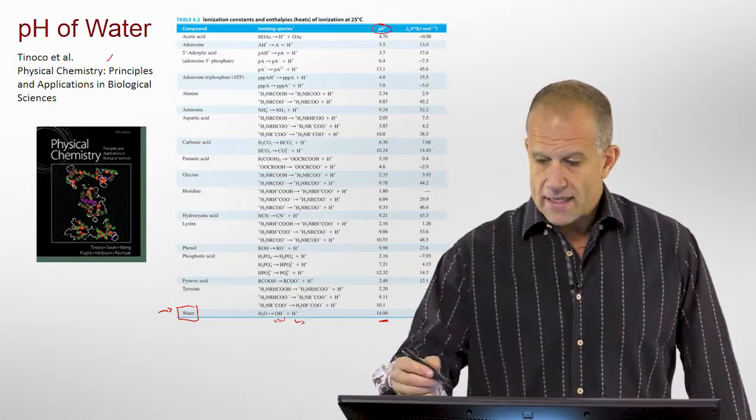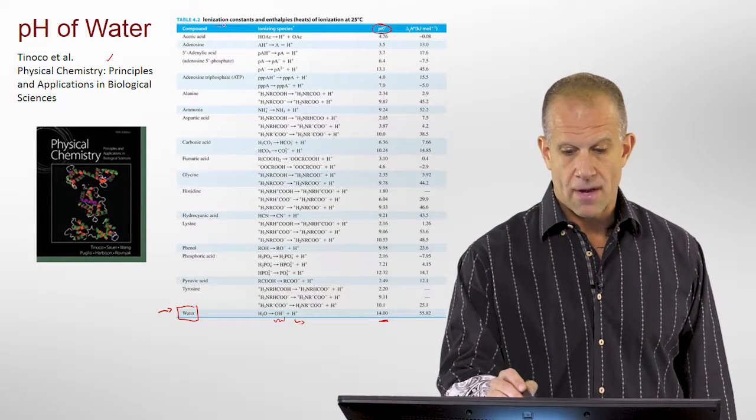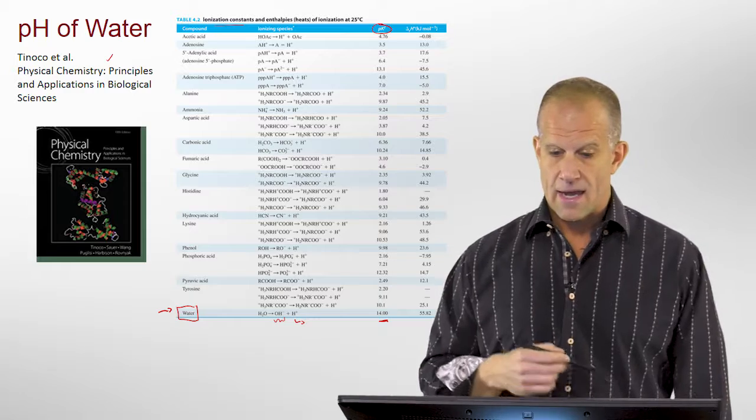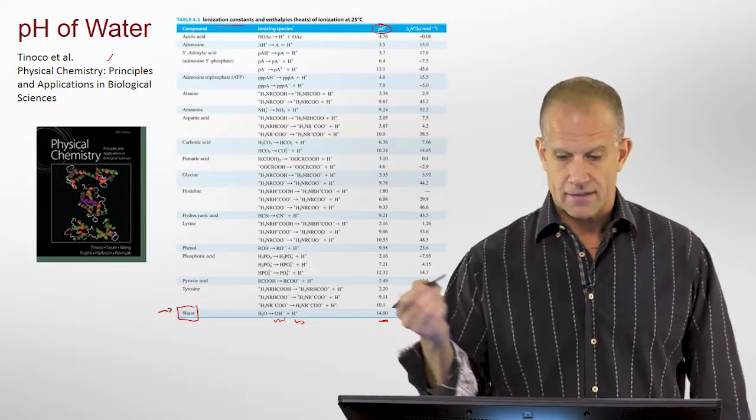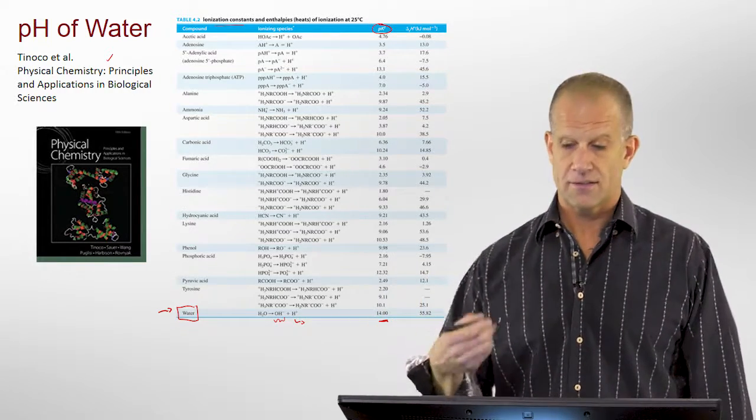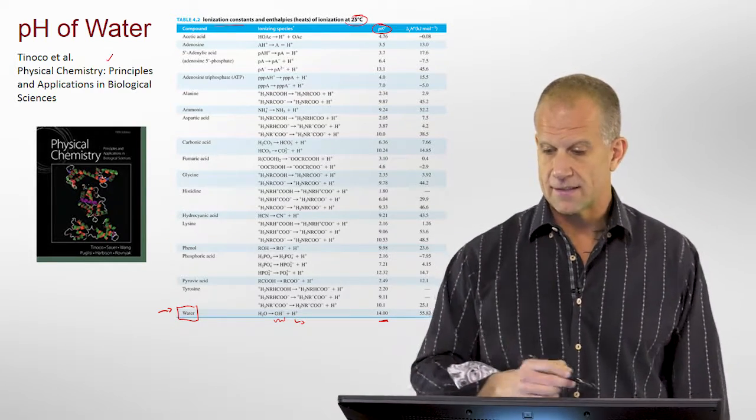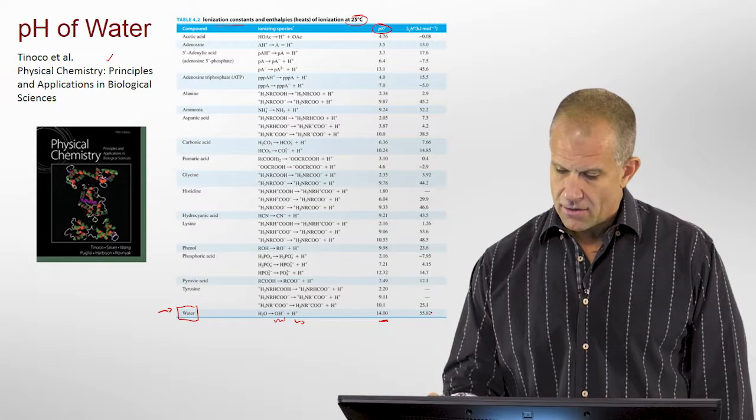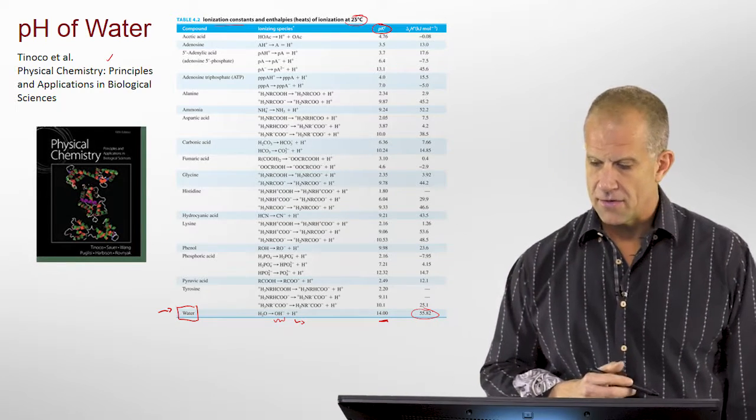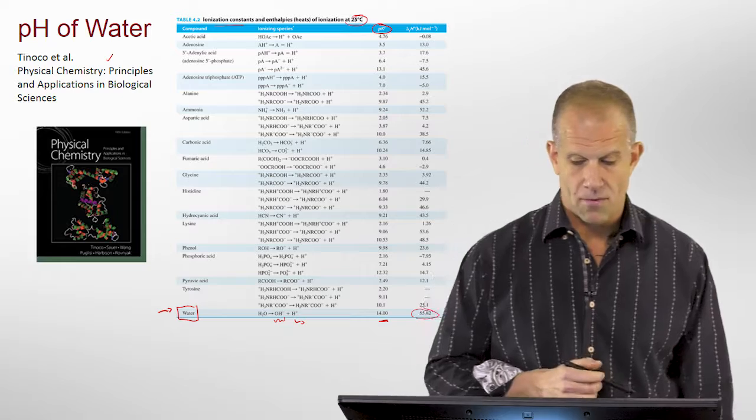You can also, for any of these, look up the ionization enthalpies. And usually it's, of course, under standard state conditions. So, standard pressure and temperature of 25 degrees Celsius. And you look that up, and you see a value of 55 kilojoules per mole.